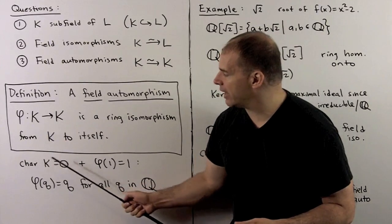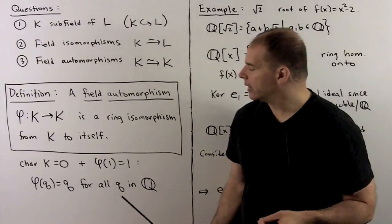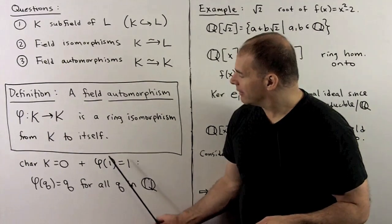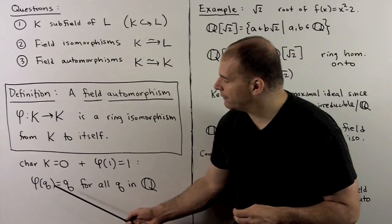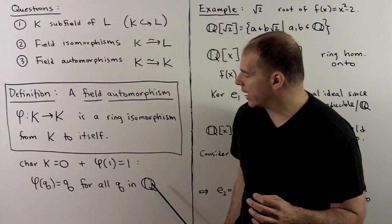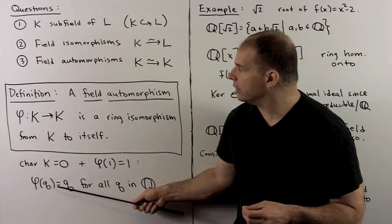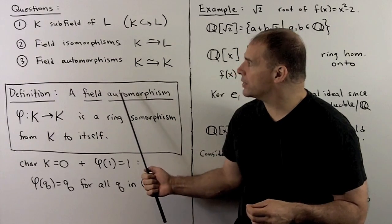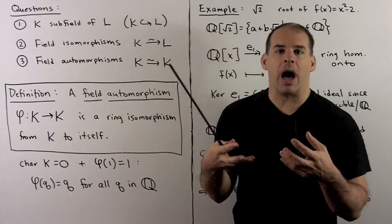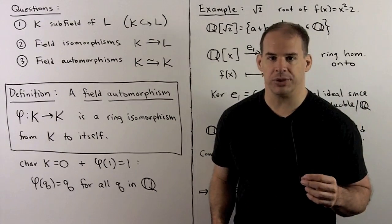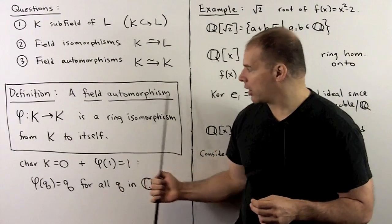If we're working with characteristic of k equal to 0, the rational numbers live inside k. If we have a ring homomorphism with phi of 1 equal to 1, then phi is going to fix the rational numbers pointwise. This idea of a fixed field, field automorphisms, and subfields — put together, that's Galois theory, and that's what we're working up to. For now, let's look at an example to get an idea of field automorphisms.